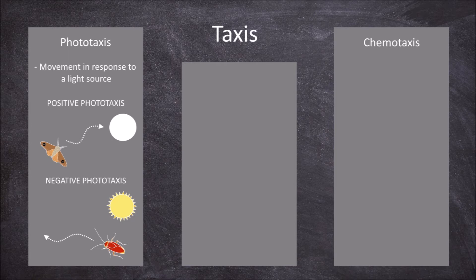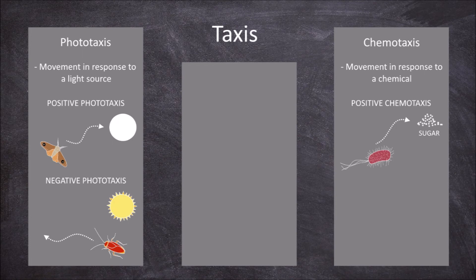Chemotaxis is the innate directional movement of an organism in response to a chemical stimulus. Positive chemotaxis is the movement towards a chemical stimulus. An example of positive chemotaxis is observed in the bacteria E. coli.